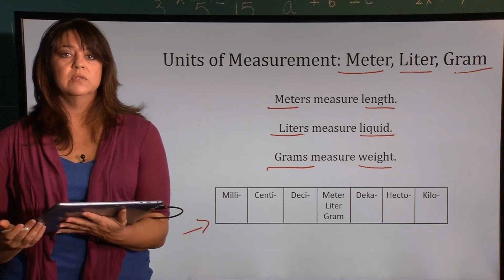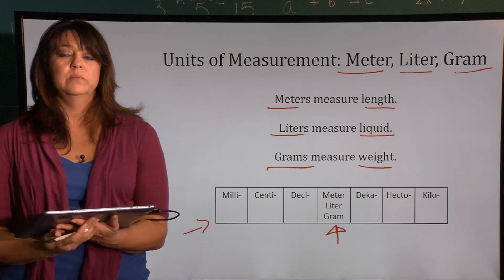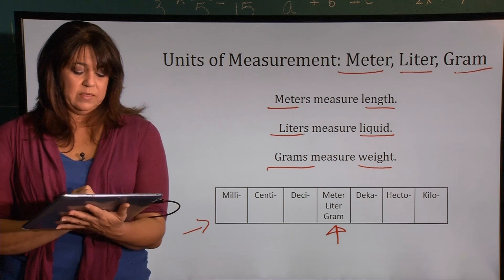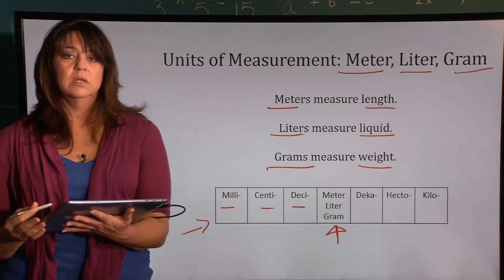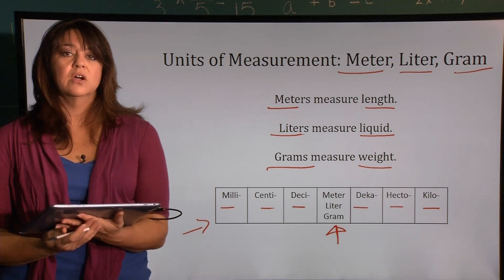This is a chart of the metric system. Each of these base units—meter, liter, and gram—can be listed in the middle. These are very small amounts compared to the base units, and these are very large amounts.